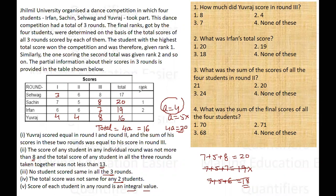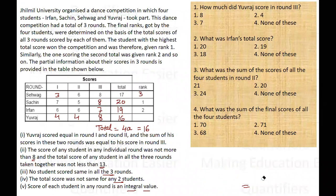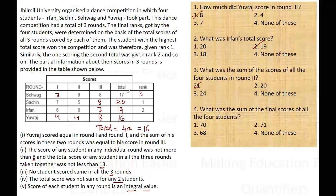Now our table is complete. Let us check the questions. The first question asks how much did Yuraj score in round three — Yuraj scored eight in round three, answer is option one. The second question asks for Irfan's total score — Irfan's total score is 19, option two. The third question asks for the sum of scores of all four students in round two — the scores were six plus five equals eleven, plus four, totaling... option one. The last question asks for the sum of the final scores of all four students: 17 plus 20 plus 19 plus 16 equals 72, which is option four.